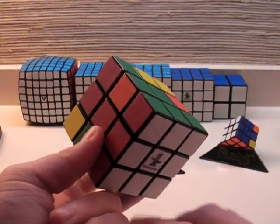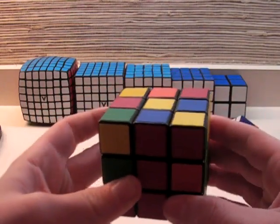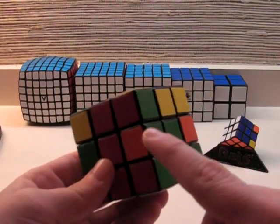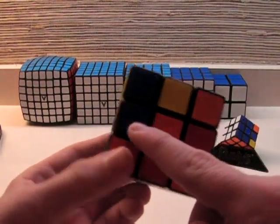So what you're doing is continuing to hold your solved side on the bottom, and you're going to be searching your top layer for an edge piece that goes in one of these four spaces.